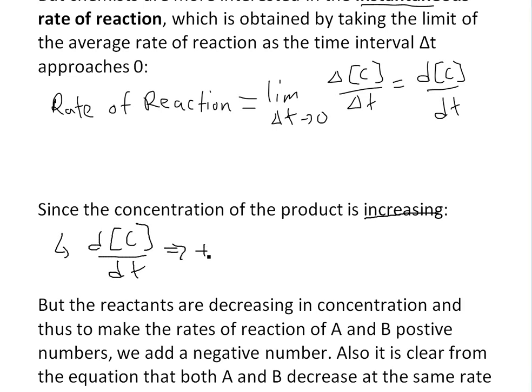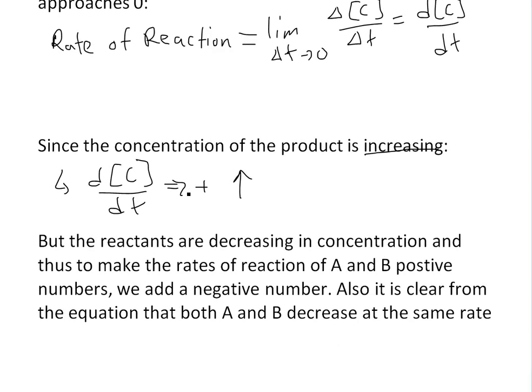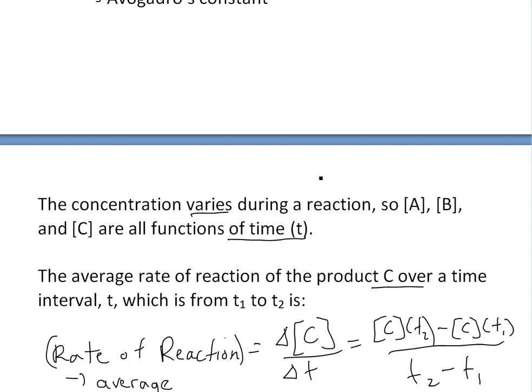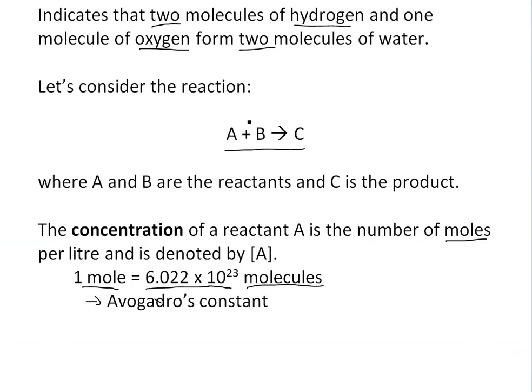But in the case of the reactants, they are decreasing in concentration, and thus this makes the rate of reactions of A and B negative. To make the reaction rate of A and B positive numbers, we add a negative sign because we're decreasing in our reactants.